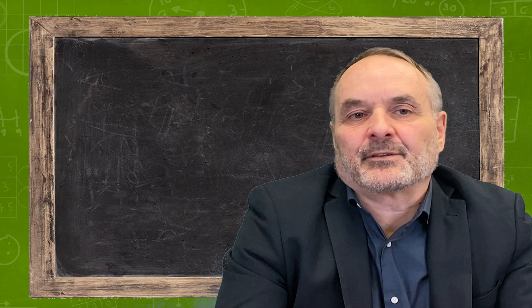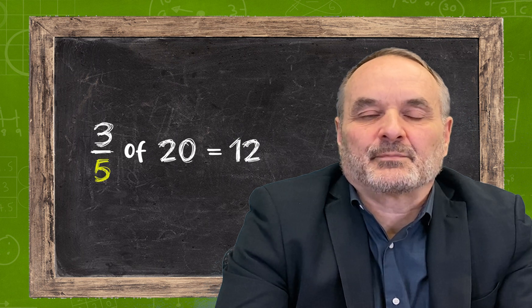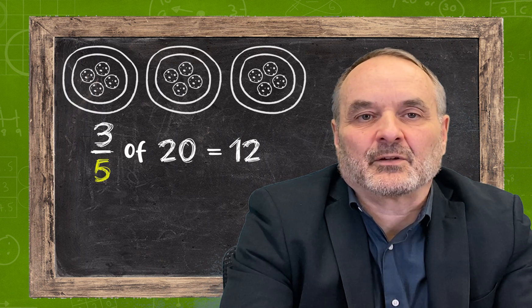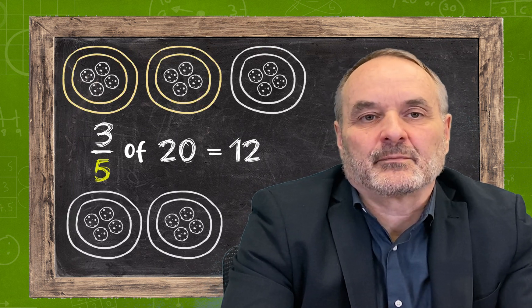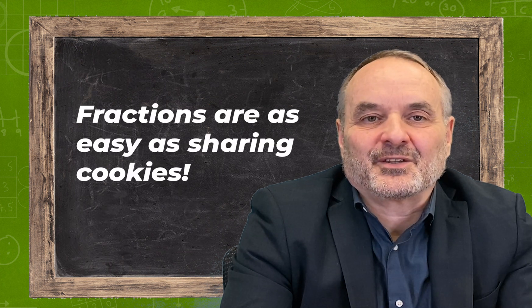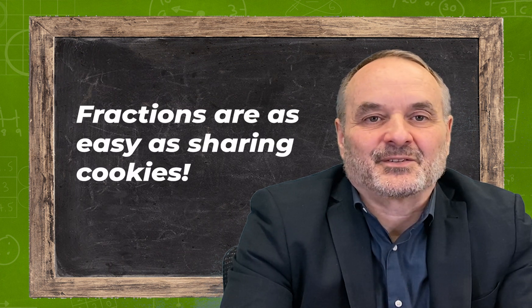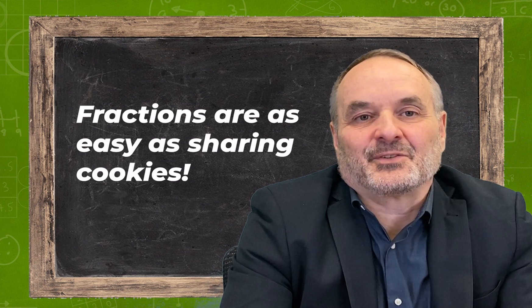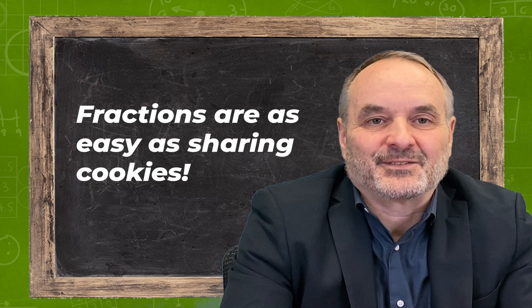Similarly, three-fifths of 20 can be shown by placing 20 cookies on five plates and taking three of them. So if you can share cookies, you can understand interest rates, and you'll find it easier to manage your finances.